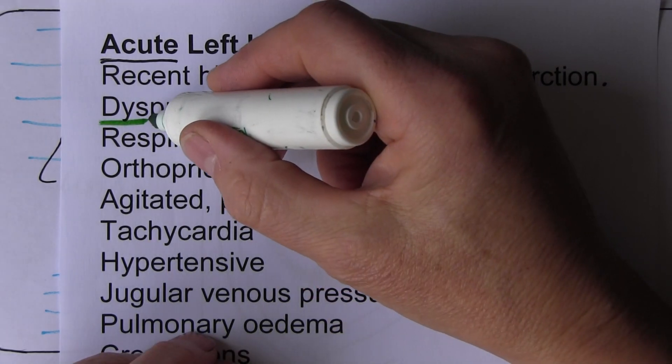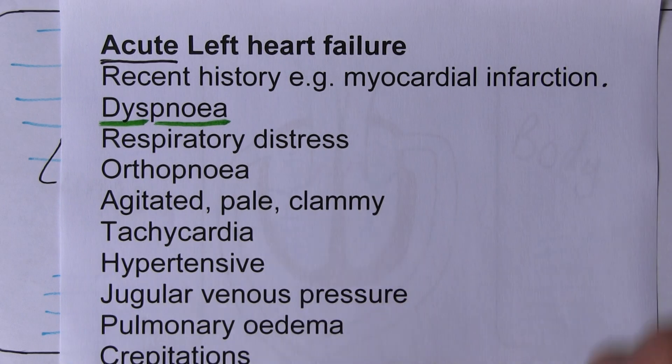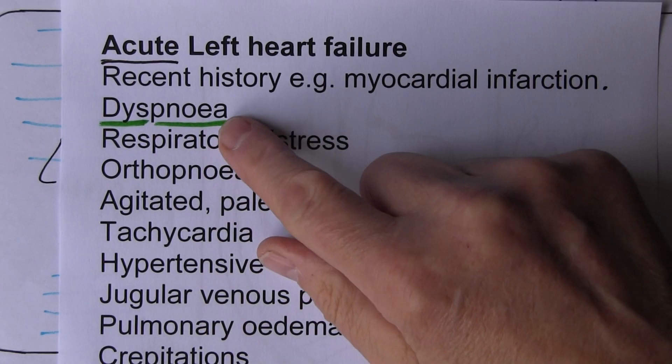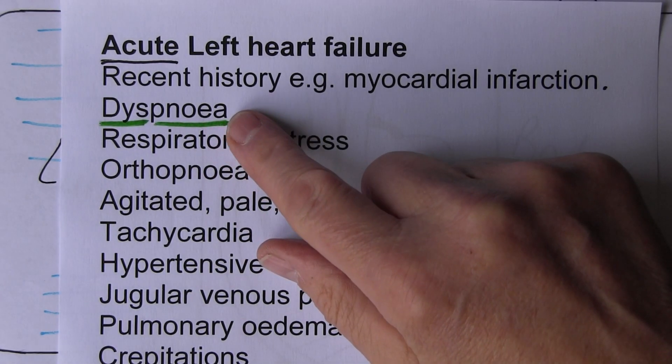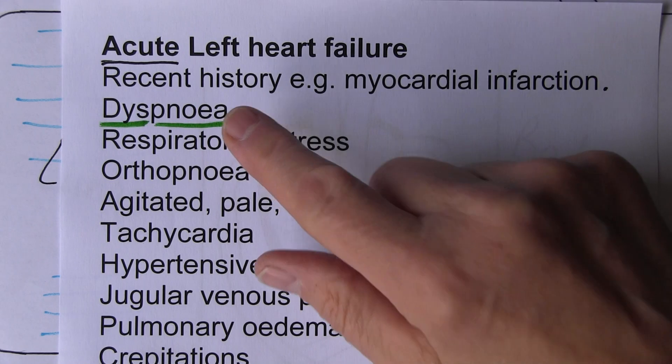Pnea means to do with air or breathing, like a pneumatic tire. That's where we get the word from. So dyspnea is difficulty breathing.